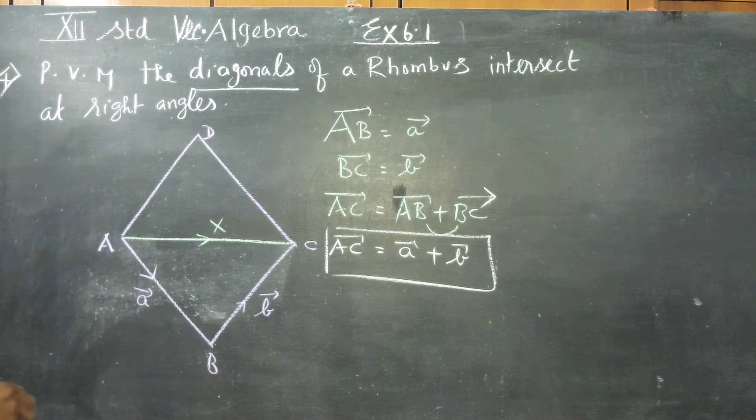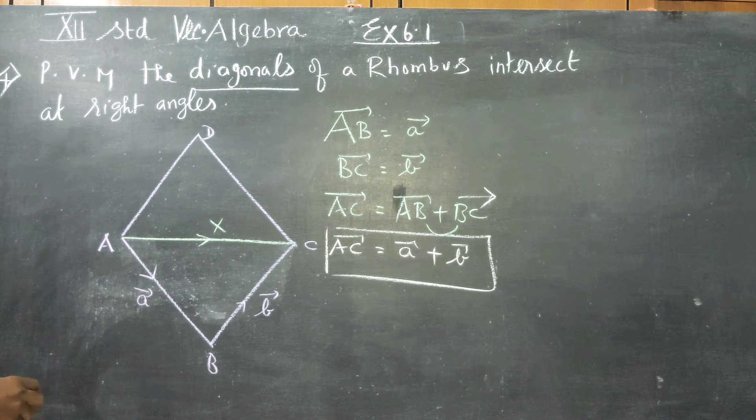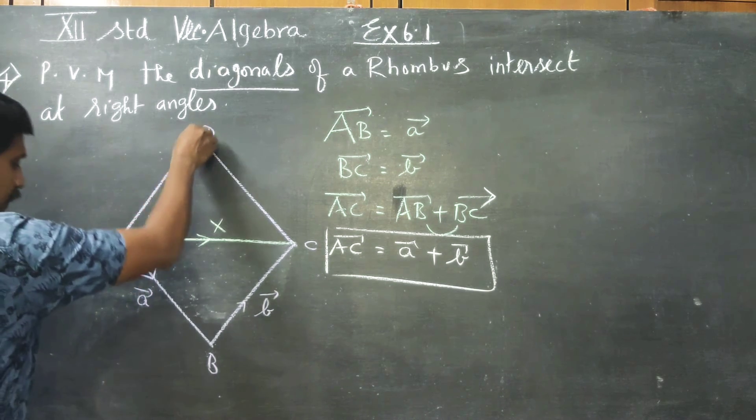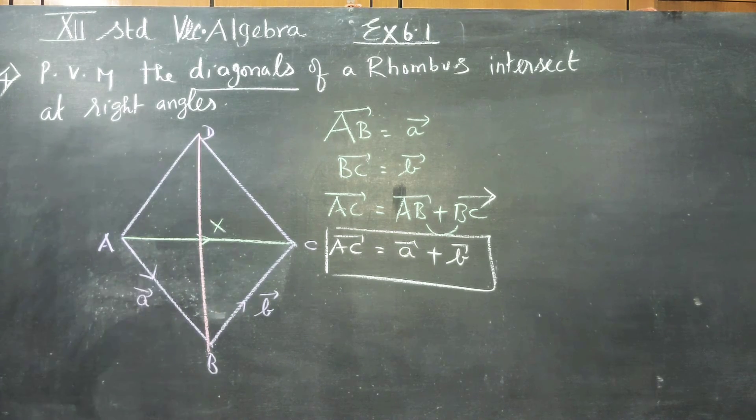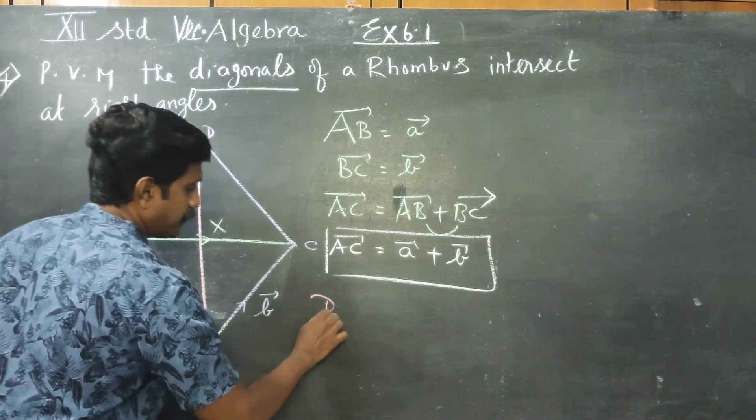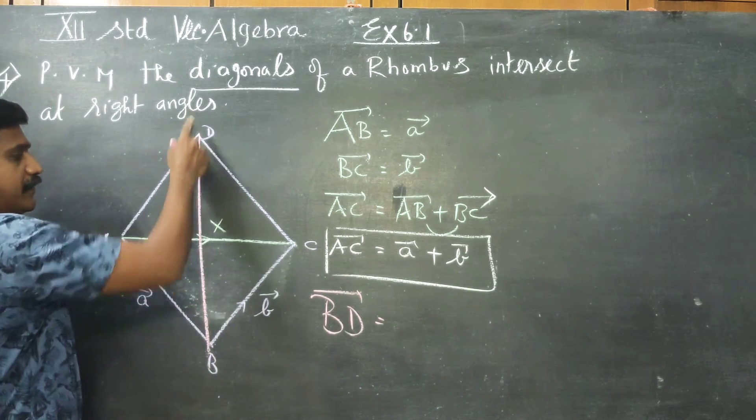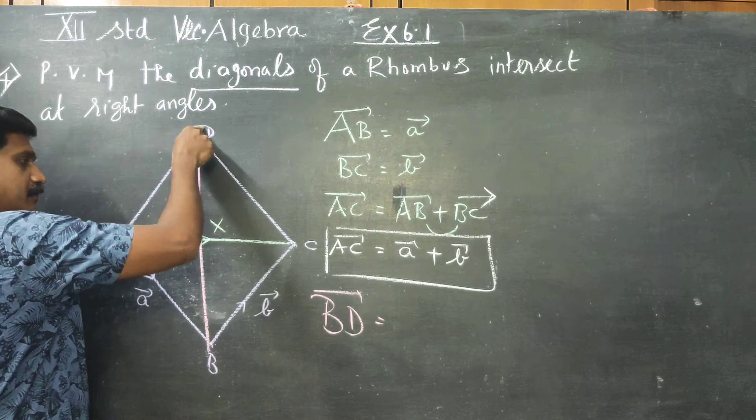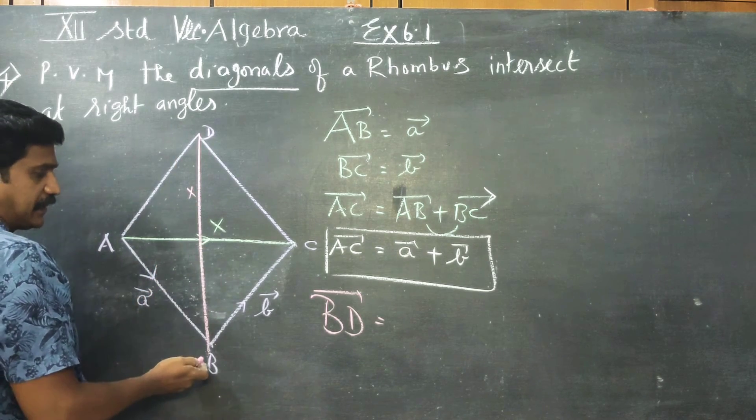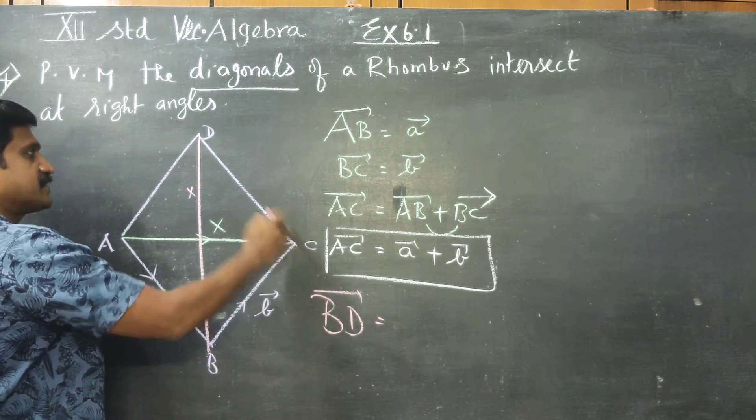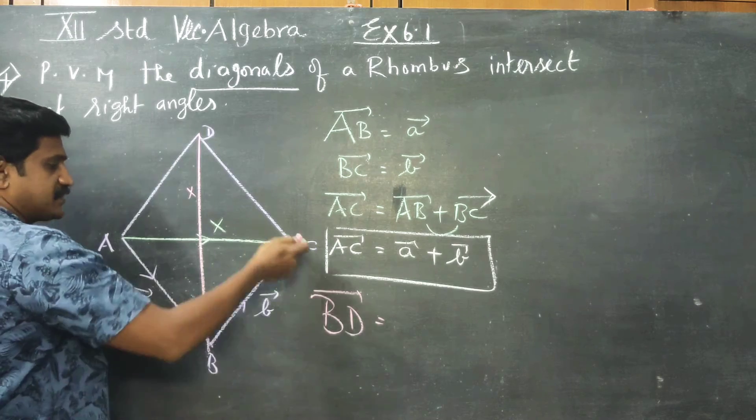Diagonals intersect each other. After finishing this I am entering into another diagonal, BD. I want BD diagonal. BD vector is BC vector plus CD vector.